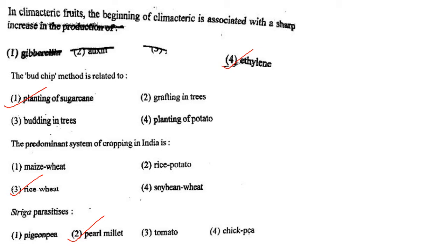Next one: The predominant system of cropping in India is option 1, maize and beet; option 2, rice and potato; option 3, rice and wheat; option 4, soybean and wheat. Answer is option 3: rice-wheat.